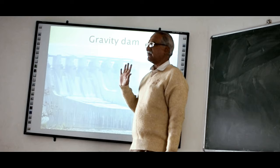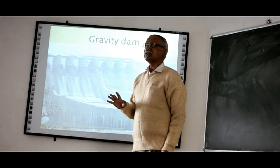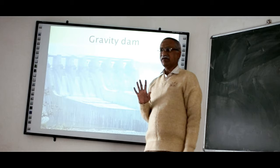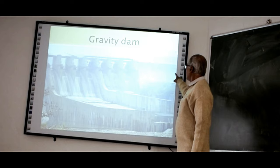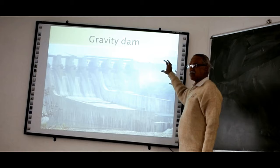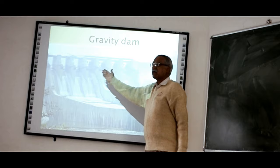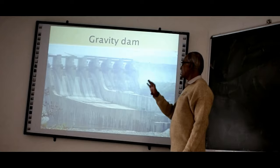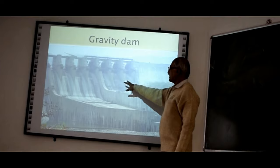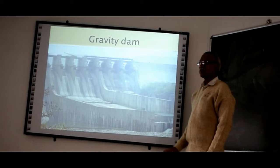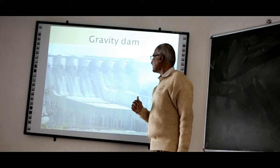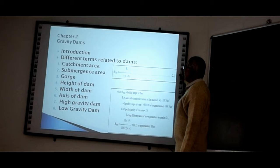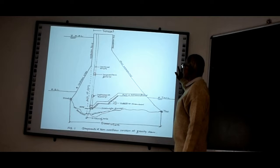The dam you are seeing here is the Sardar Sarovar project, a very prestigious project of the country. The portion you are seeing is the main dam body. Part of the portion is shown here, and the other portion you are seeing is the spillway portion. Two types of spillways are provided — the spillway in one portion is different from the other. That is a different topic of discussion. Right now, we can see that this is the overall section of the gravity dam.